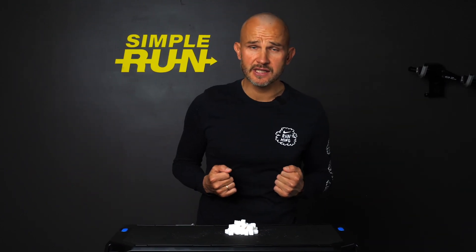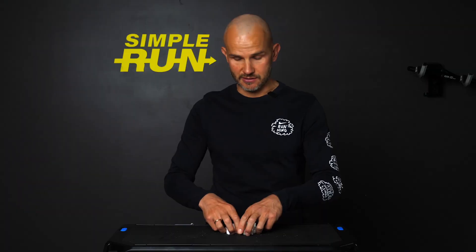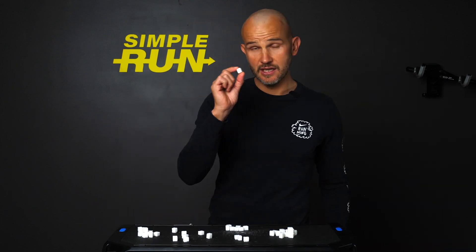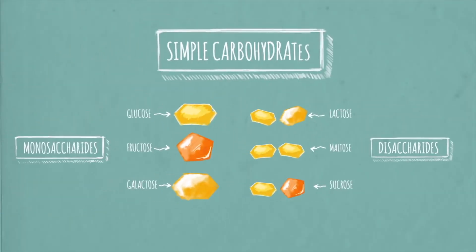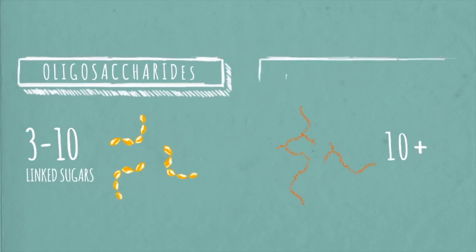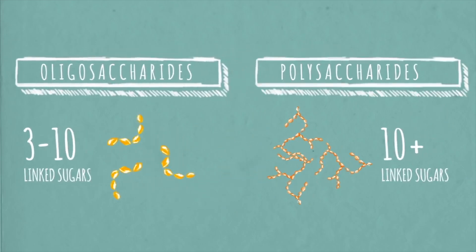If there are fewer than 10 molecules in a carbohydrate, the breakdown is a fairly quick process. But when there are more than 10, our digestive system needs to divide it into parts again and again until they become separate units. Carbohydrates with up to 10 sugars are called simple, and those with more than 10 are called complex.